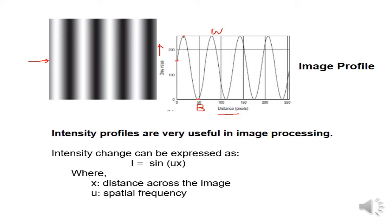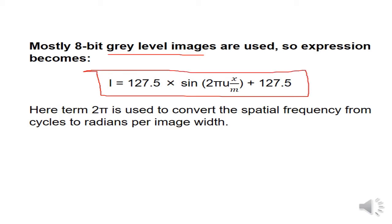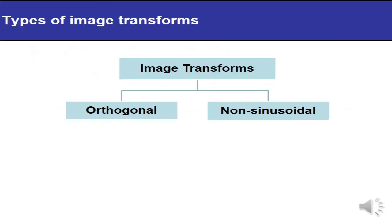The intensity change can be expressed in sinusoidal form as I = sin(ux), where x is the distance across the image and u is the spatial frequency. For an 8-bit gray level image, the expression will be I = 127.5 × sin(2πux/M + offset), where the term 2π is used to convert the spatial frequency from cycles to radians per image.